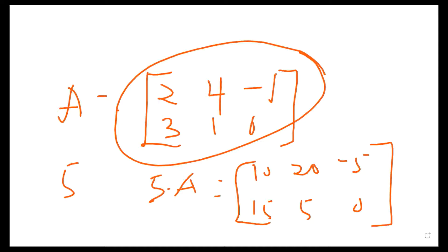To be able to add two or three matrices, the dimensions of all the matrices must be the same. I can only add a 3×3 to a 3×3, or a 2×3 to a 2×3 matrix. Therefore, if I have matrix A and matrix B, denoted by M×N dimension, their sum is only possible if they both have the same dimension.